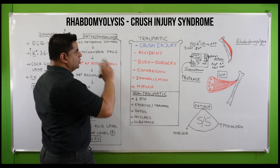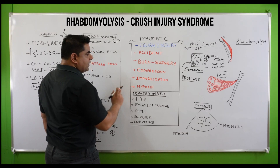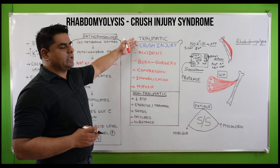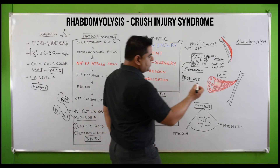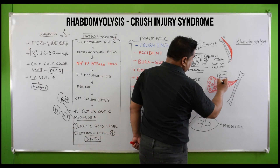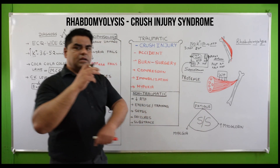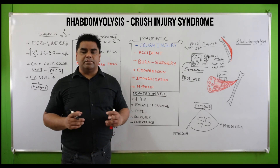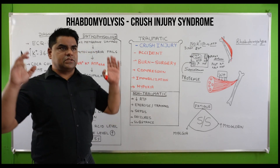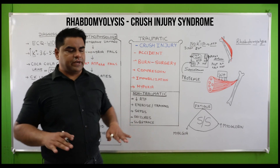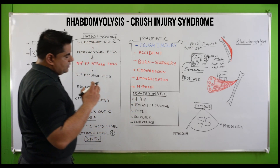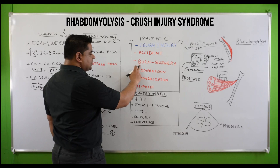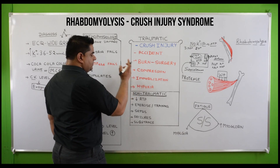What is crush injury? There are two types of causes: traumatic and non-traumatic. Whenever our muscles face acute injury — for example, under traumatic causes, when a heavy weight is applied on the muscles, the muscles get compressed and damaged. For example, if an earthquake occurs, a roof falls and crushes you under its weight. This can also include car accidents, roadside accidents, and sports injuries.